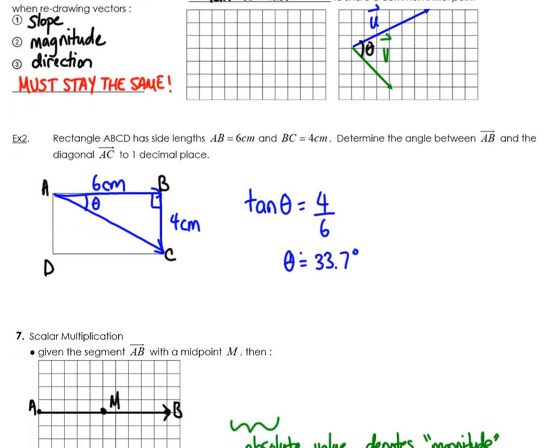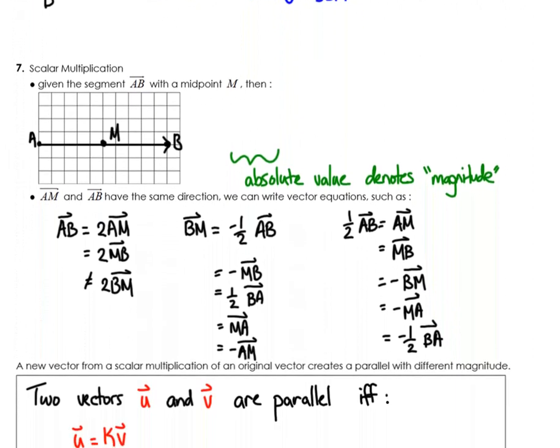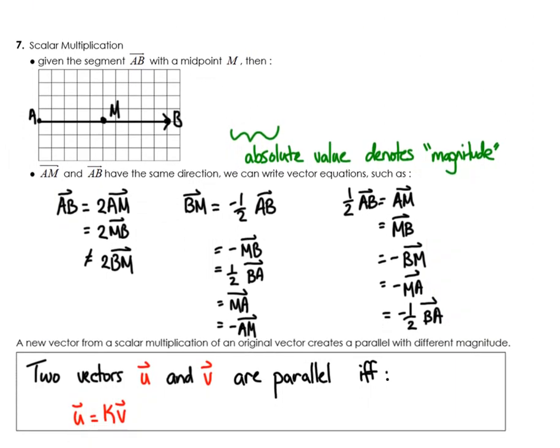All right so a couple more concepts that I want to go over before the end of this video. Number seven, scalar multiplication. What I want to tell you in this section is that two vectors are parallel if they are scalar multiples of each other. So let me explain. Vector AB in this case is the same as two AMs because if you think about it this whole thing is the same as having two of these because M is in the middle. It says in the question that it's the midpoint.